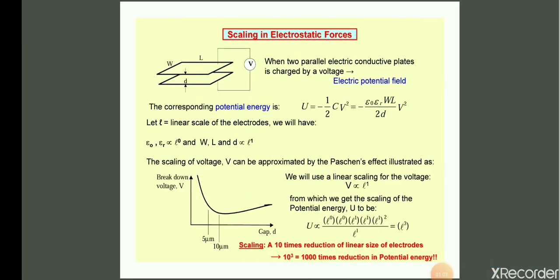ε₀ and εᵣ have a neutral effect, meaning they are directly proportional to L⁰. W, L, and D are directly proportional to L¹, meaning if the linear dimension decreases by one unit, W, L, and D also decrease by one unit. Next, we consider how voltage V scales.